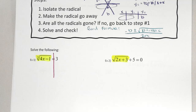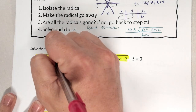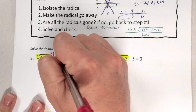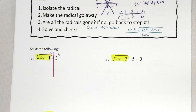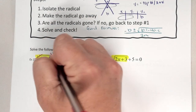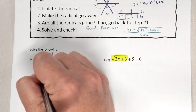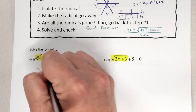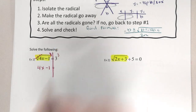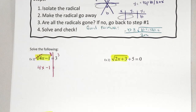Step 2: make the radical go away. How do I get rid of a cube root? The opposite of cube root is to cube. So if I cube this side, I have to cube this side to keep it equal. On the left, your cube root cancels your cube, and you're left with 4x minus 1. And on the right, what's 3 cubed? 27.